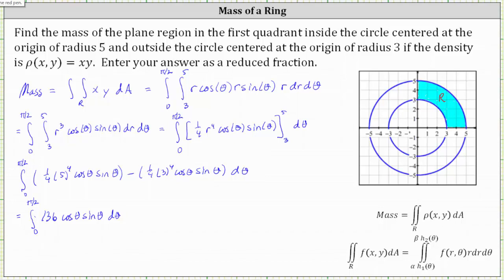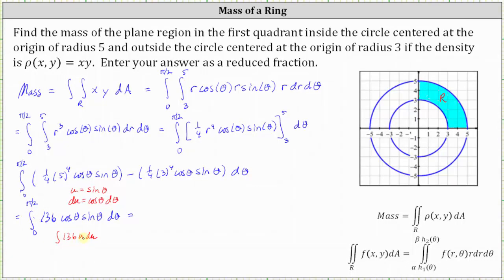Now we integrate with respect to theta. We'll perform U-substitution here. Let u equal sine theta, and therefore du is equal to cosine theta d-theta. In terms of u, we have the integral of 136 u du. The antiderivative is 136 times u squared divided by two, which is 68 sine squared theta.